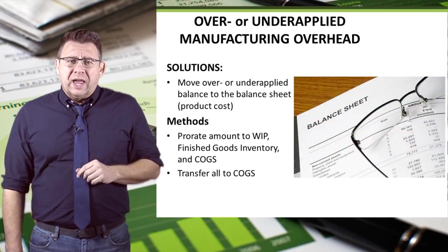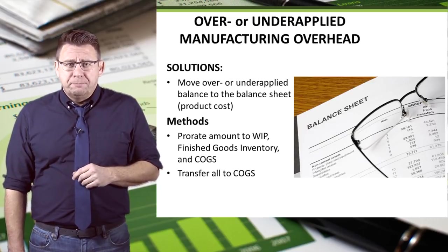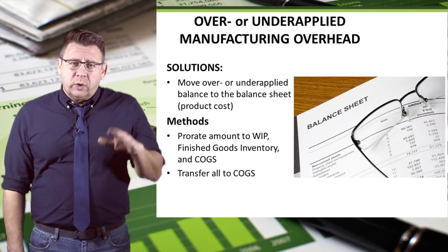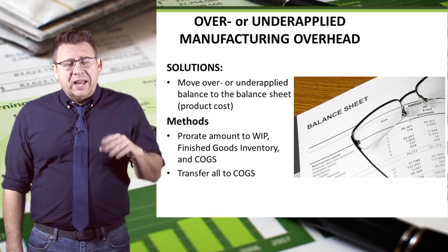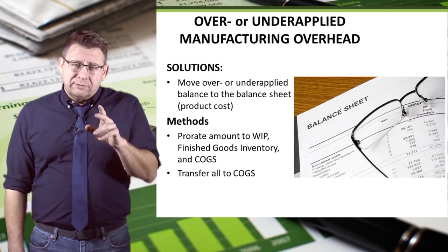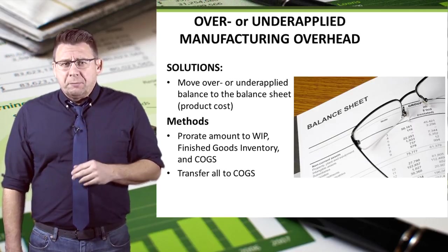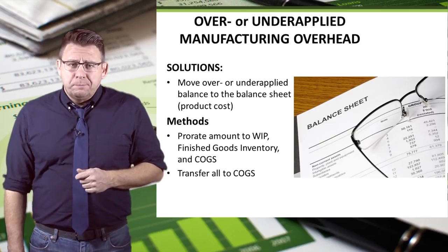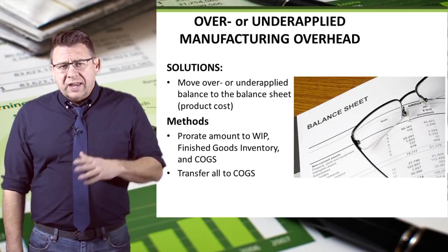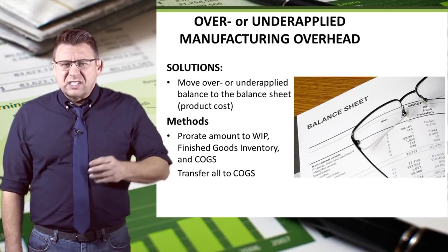There are a few different ways that companies can remove the balance from manufacturing overhead. The more complicated way is to prorate the balances between WIP, FGI, and cost of goods sold. This method is fairly common and usually taught in a cost accounting course. The simpler method, used in principles of accounting, is to move the balances to cost of goods sold and just assume all of the jobs have been sold or that the amount is immaterial.